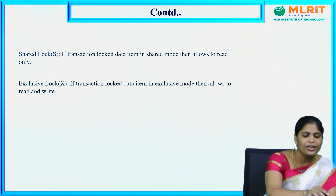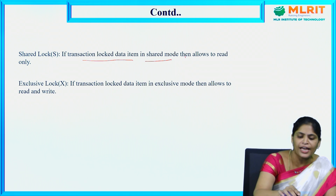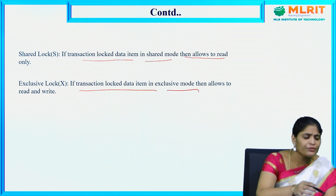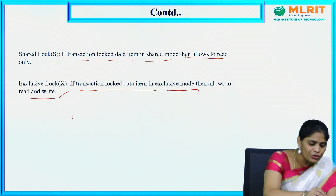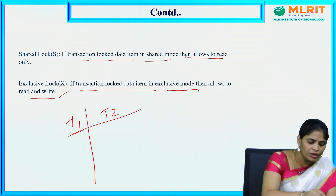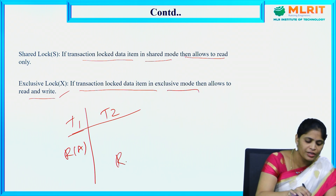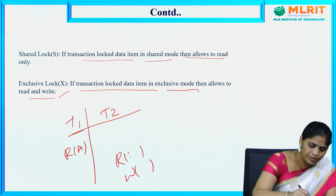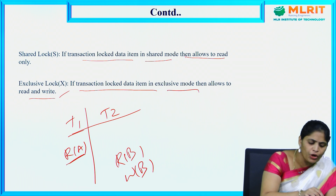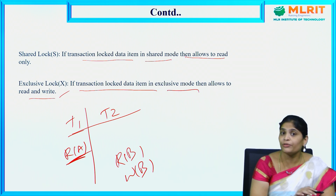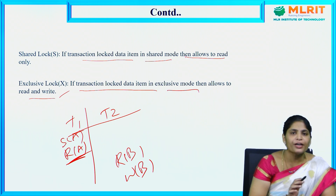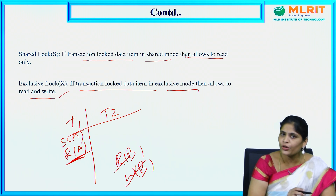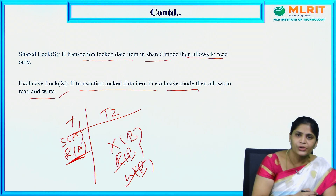In summary: if a transaction locks a data item in shared mode, it is allowed only to read the data. If a transaction locks a data item in exclusive mode, it is allowed to read and write. For example, in T1 if we only want to read data item A, we acquire a shared lock. In T2 if we want to read and write on data item B, we acquire an exclusive lock — X(B).